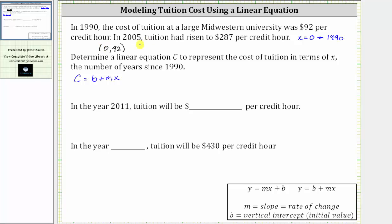We also know in 2005, tuition had risen to $287 per credit hour. Since 2005 is 15 years after 1990, we can represent this as the ordered pair (15, 287). X equals 15 represents the year 2005.